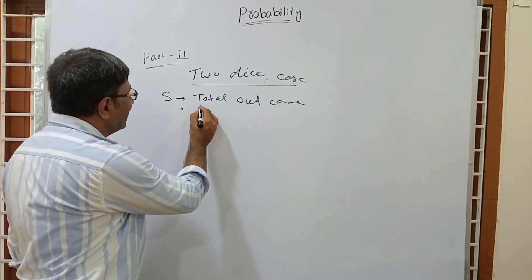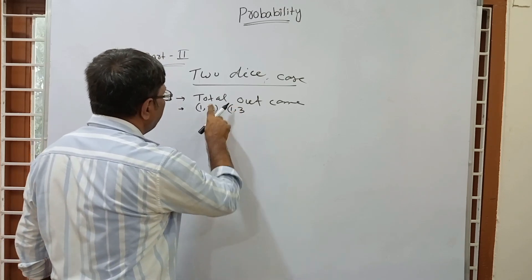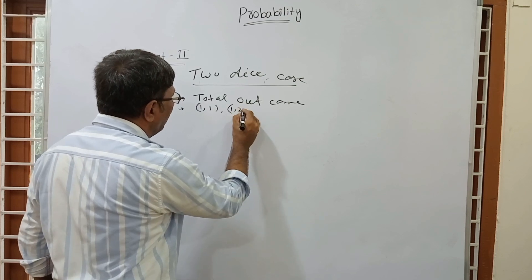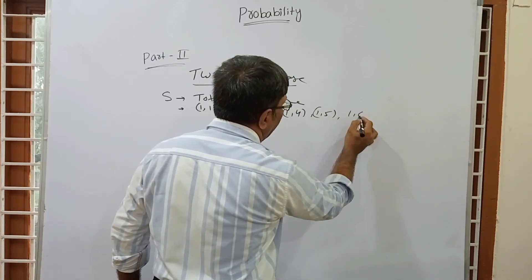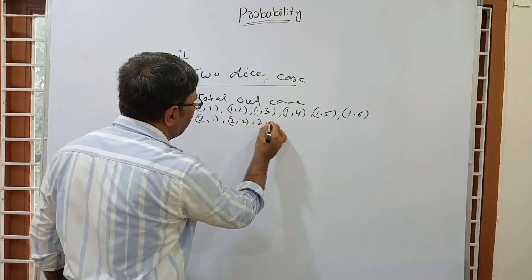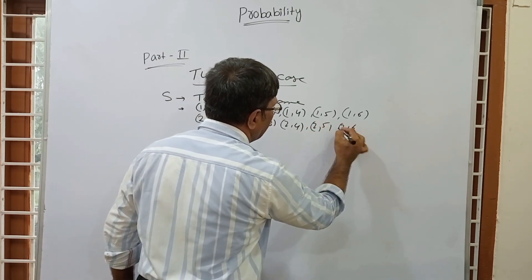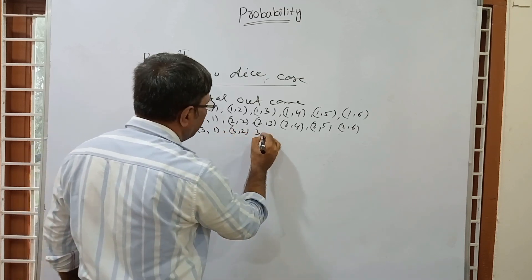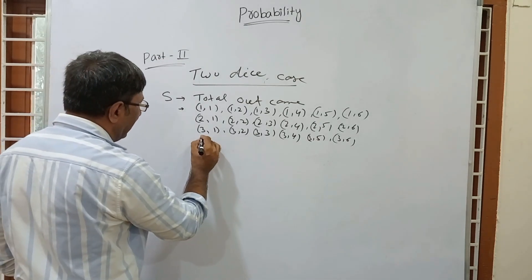Suppose one die shows 1 and the other shows 1, 2, 3, 4, 5, or 6. So from the first die showing 1, we get pairs: (1,1), (1,2), (1,3), (1,4), (1,5), (1,6). Similarly if the first die shows 2, we get (2,1), (2,2), (2,3), (2,4), (2,5), (2,6).